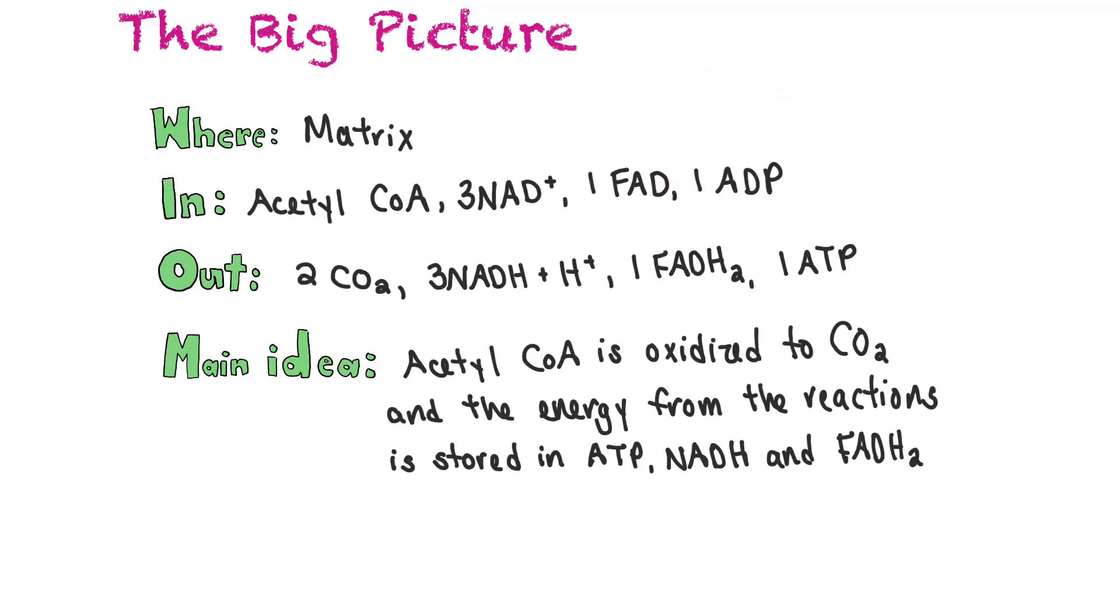The outputs for this reaction are two carbon dioxide, so the rest of the carbons in the acetyl group get broken down so now glucose has been completely broken down into carbon dioxide. We get three NADH + H+ which will be used in our next phase, the electron transport chain, and then one FADH2 which can also be used in the electron transport chain, and then finally one adenosine triphosphate.